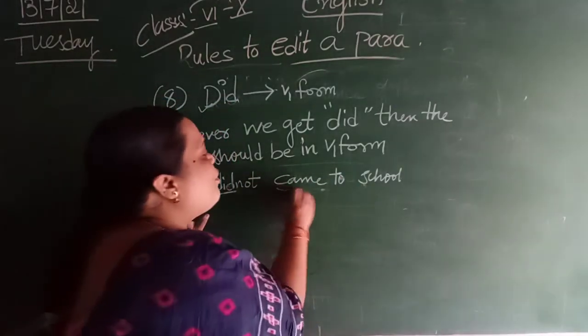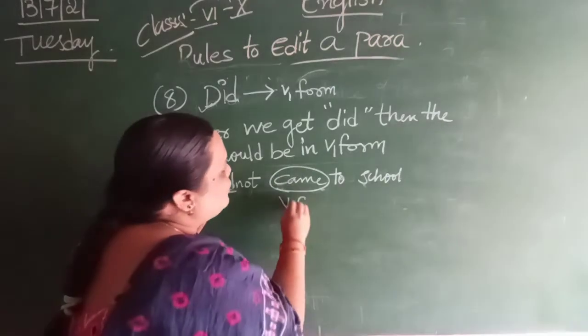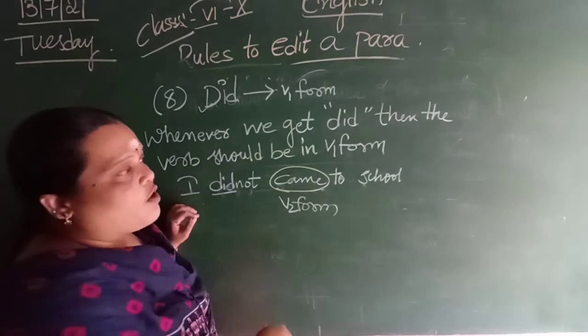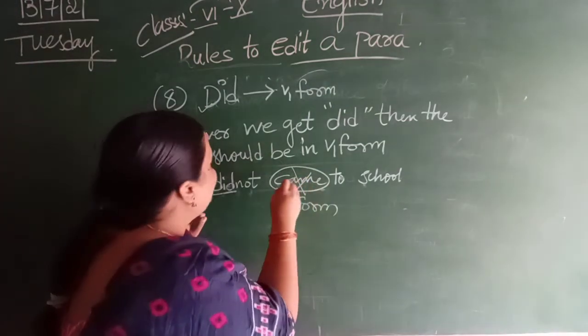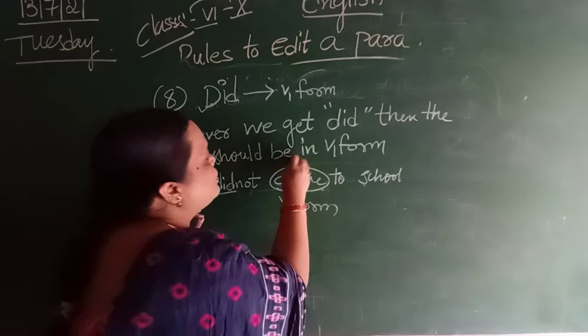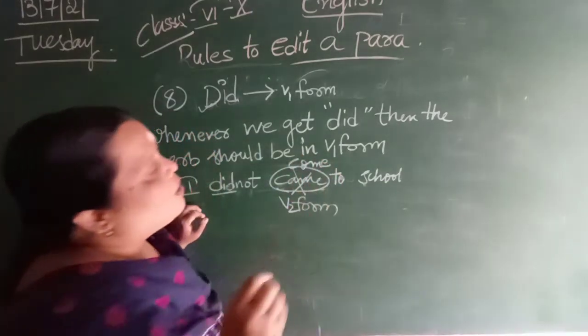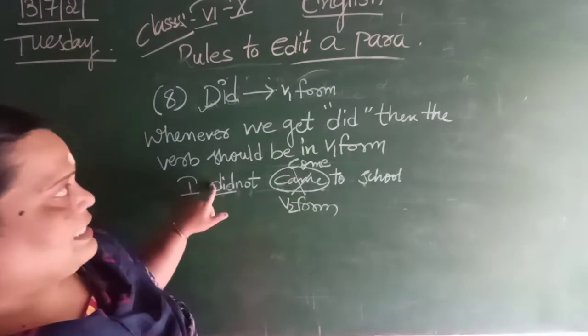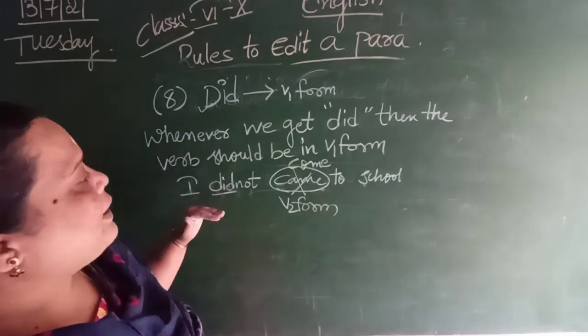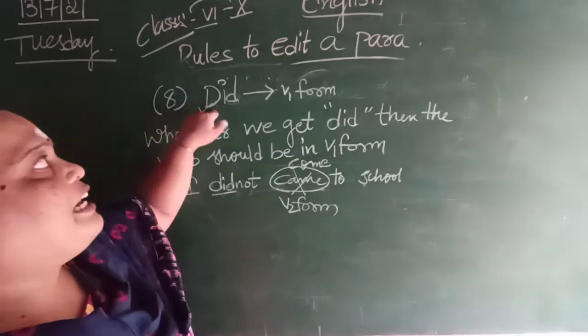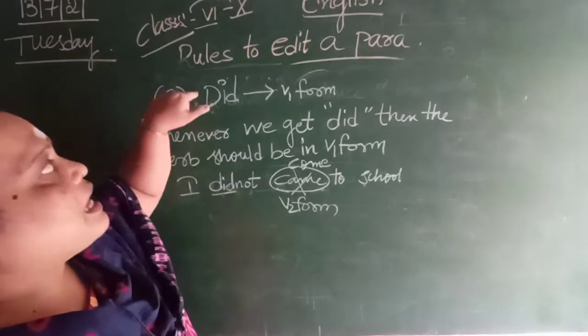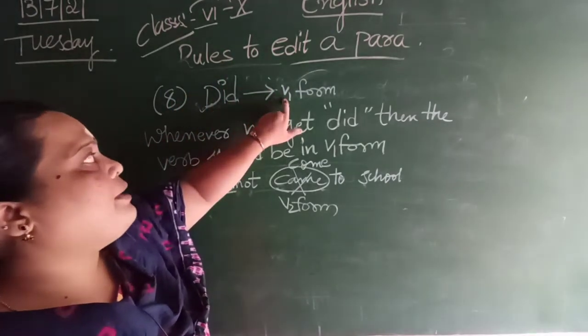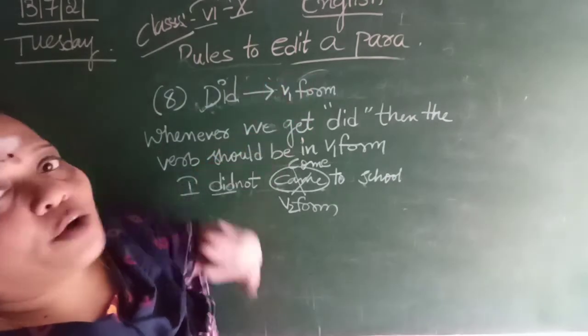Now, the verb, what we have used here, this is V2 form. That is wrong. That is wrong. Past tense, you are asked. That is wrong. This is wrong. Then, what we have to use here, we have to use come. I did not come to school. Okay. So, what is that is? The meaning in the sentence, it should be in V1 form. Is that clear?